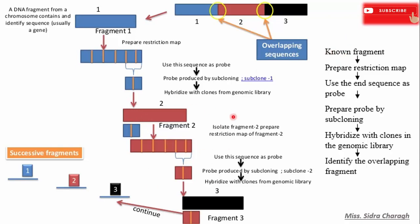To summarize this procedure: we start with a known fragment one, prepare a restriction map, use the end sequence as a probe by subcloning, then hybridize clones in the gene library and identify the overlapping fragment. All these overlapping sequences are used to construct the genetic map of the chromosome and to locate the target genes. Chromosomal walking is a method of analyzing long stretches of DNA using small overlapping fragments from the reconstructed genomic library. That covers chromosomal walking and all the screening procedures.